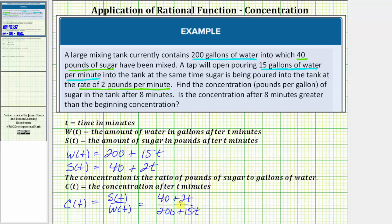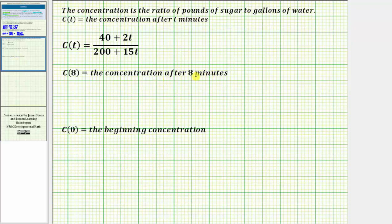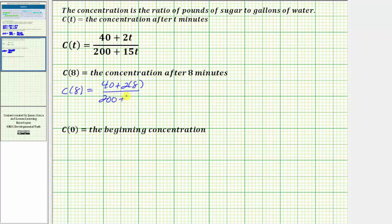Now that we have a function for the concentration of sugar in pounds per gallon of water, we can determine the concentration after eight minutes. To determine c(8), we substitute eight for t into our concentration function: c(8) equals the quantity (40 + 2 times 8) divided by the quantity (200 + 15 times 8).